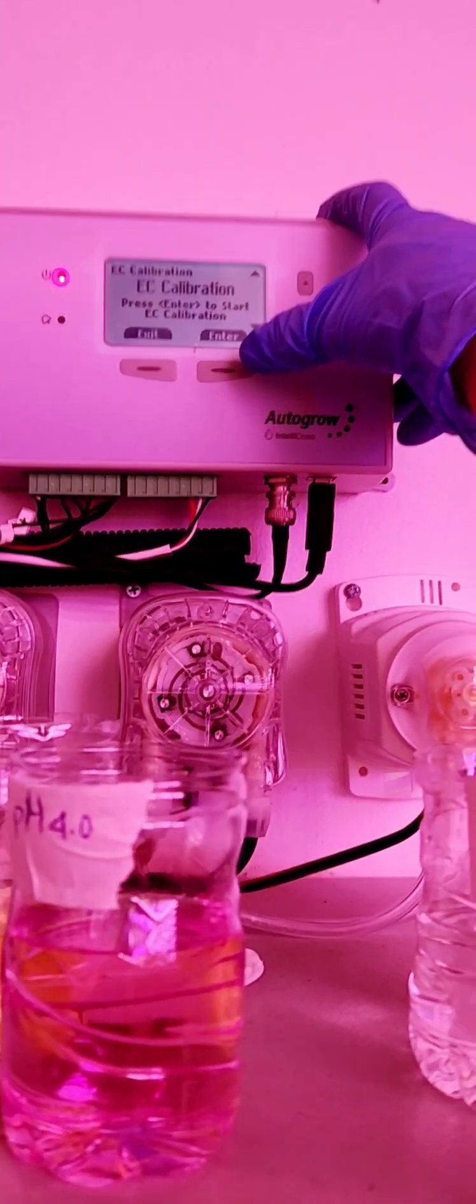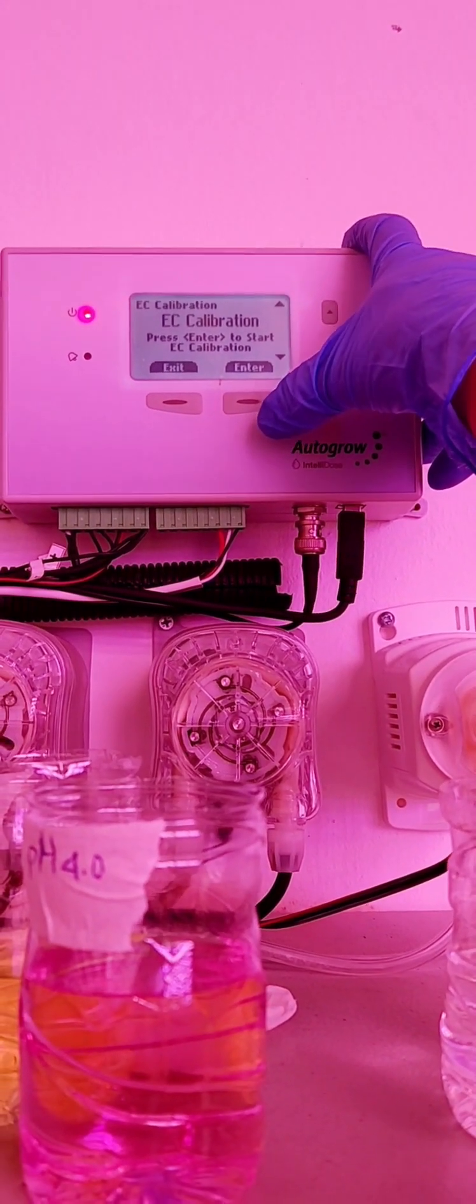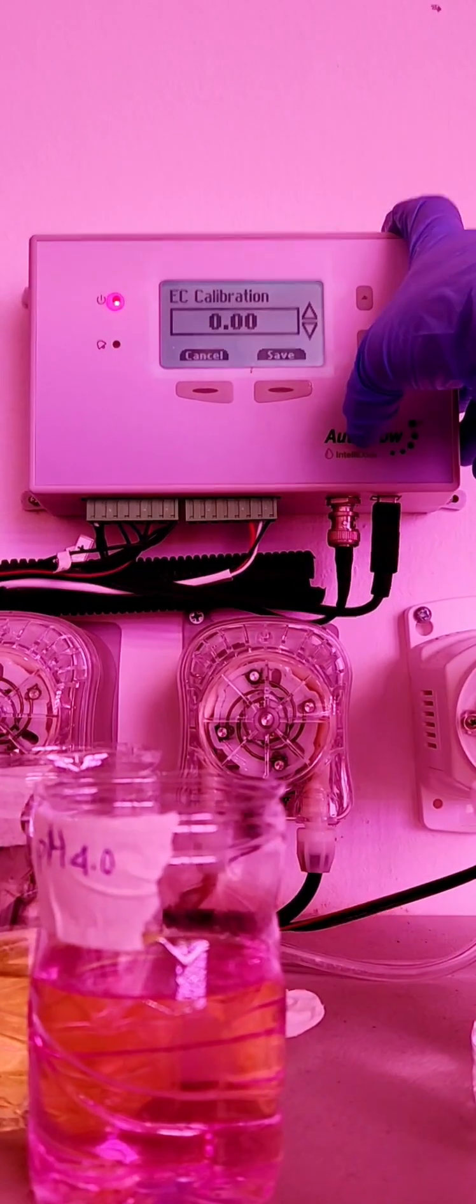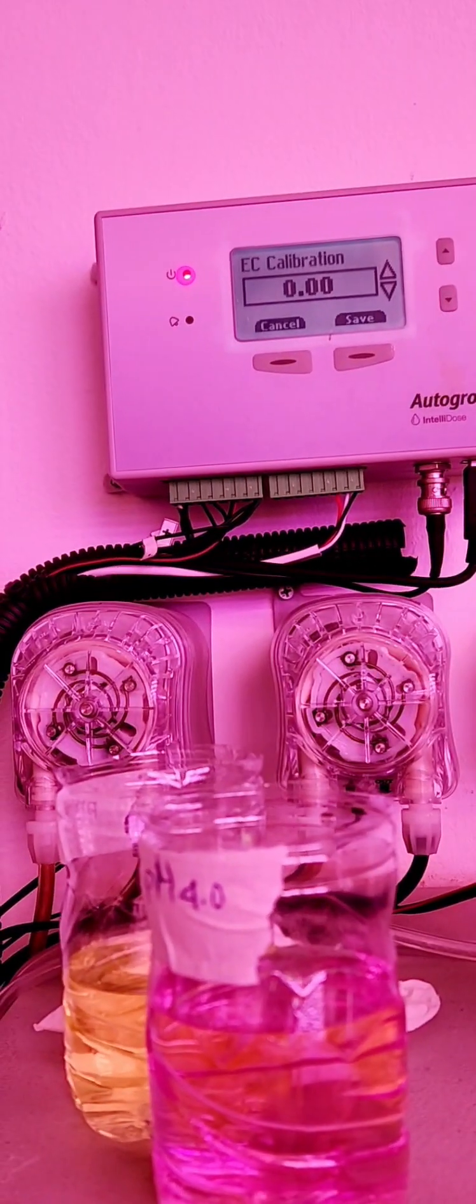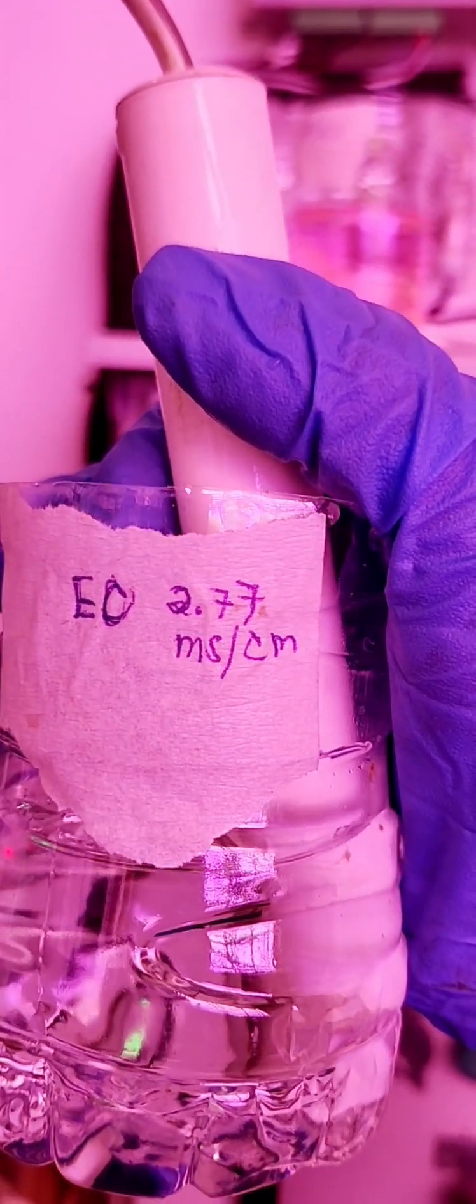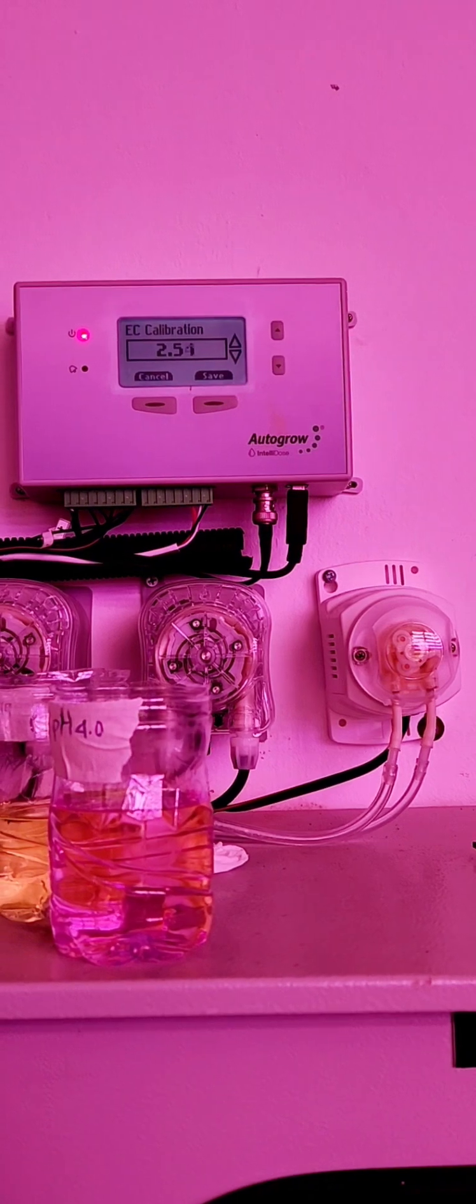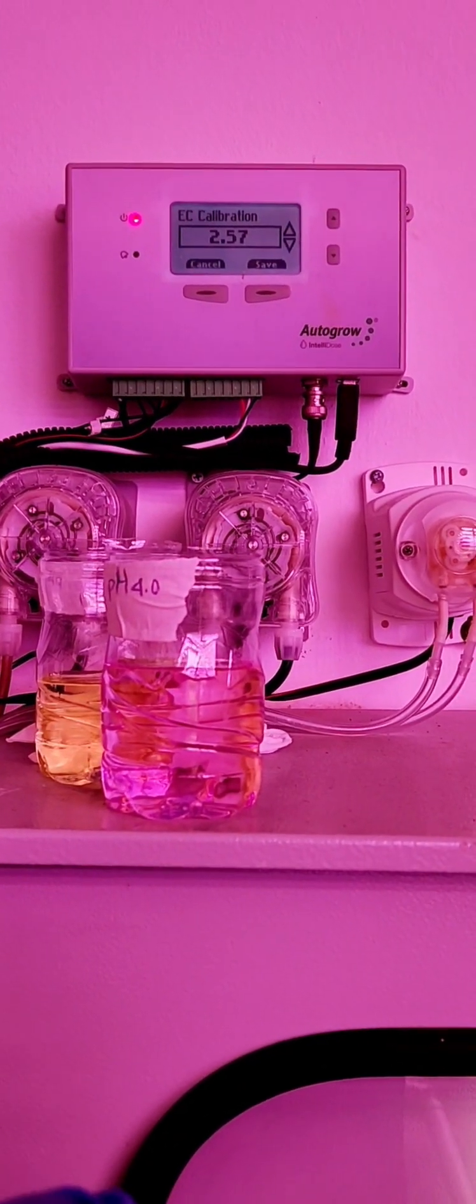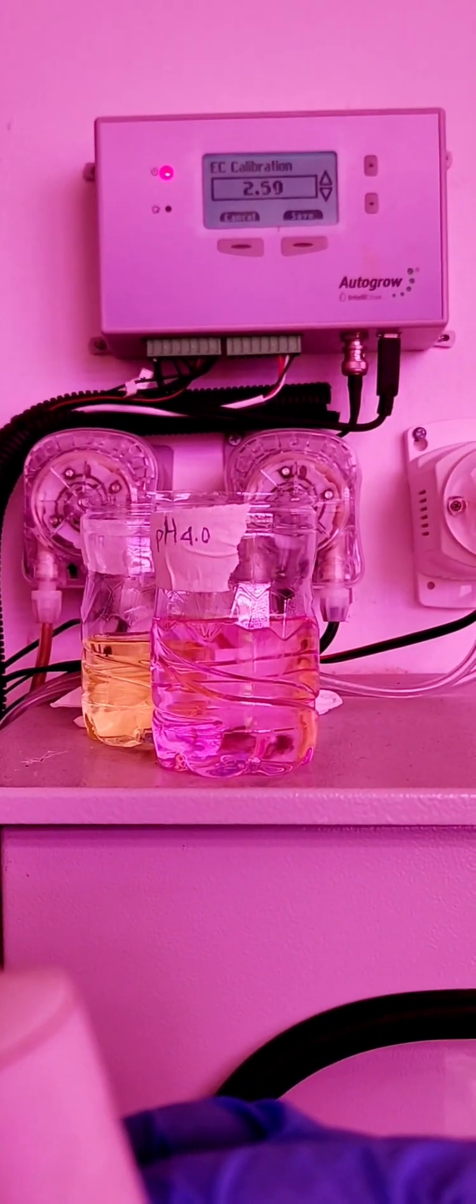This is pH. We just scroll down. And there you are. We can see it's EC. And then, we just press enter again. And there, we just put inside the calibration solution, which is the EC 2.77. As we can see there. The number is going up until we reach the 2.77. And then, we save again.